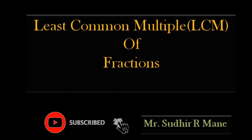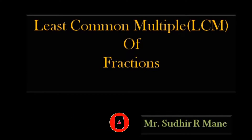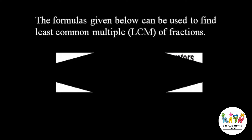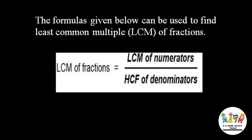Hi friends, today we have to discuss the least common multiple of fractions. The formula for LCM of a fraction is: LCM of a fraction is equal to LCM of the numerators divided by GCF of the denominators.